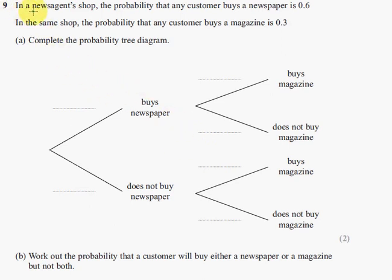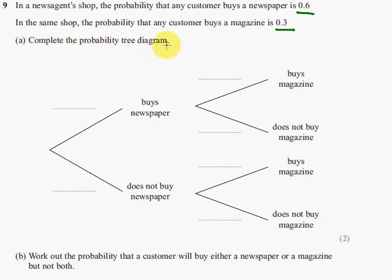Question 9. In a newsagent shop, the probability that any customer buys a newspaper is 0.6. In the same shop, the probability that any customer buys a magazine is 0.3. Part A says complete the probability tree diagram.